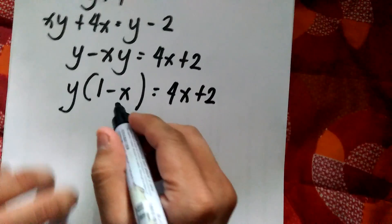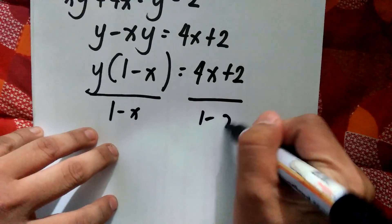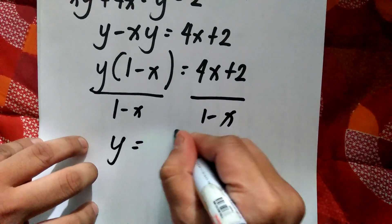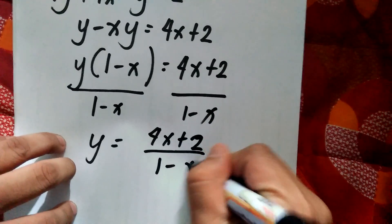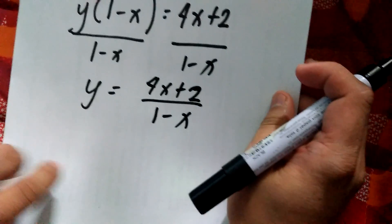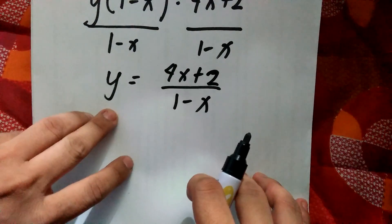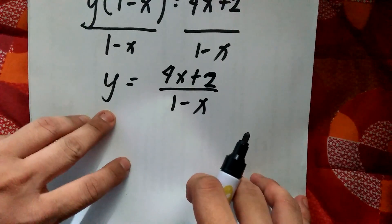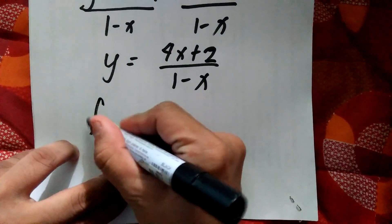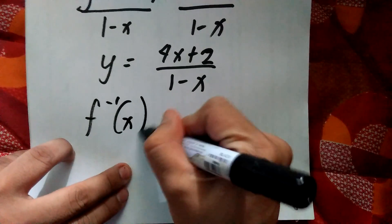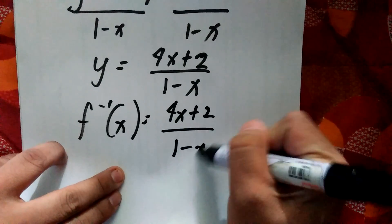Then we can divide both sides by 1 minus x, and the value of y will be 4x plus 2 over 1 minus x. Note that we are looking for the inverse of the function, so we need to use the proper symbol. The proper symbol for the inverse of a function is f inverse of x equal to 4x plus 2 all over 1 minus x.